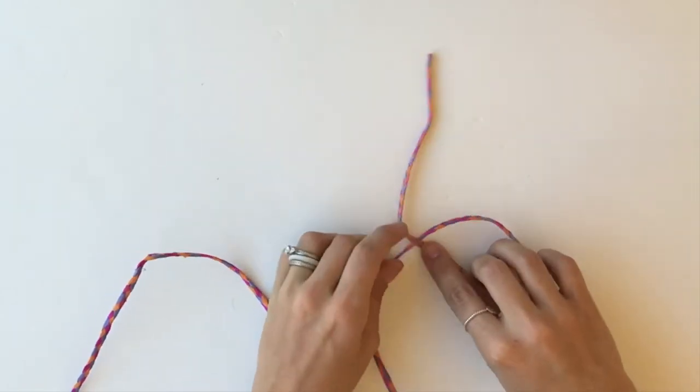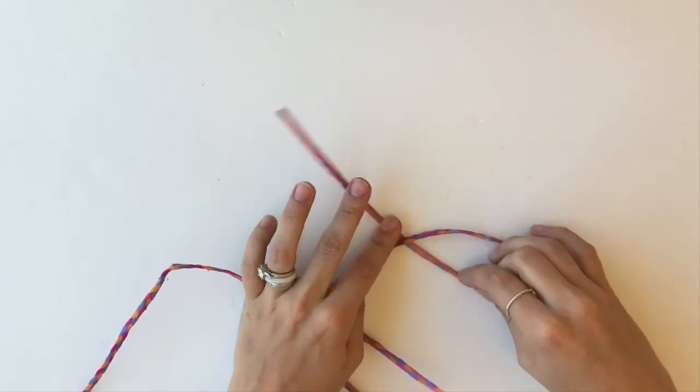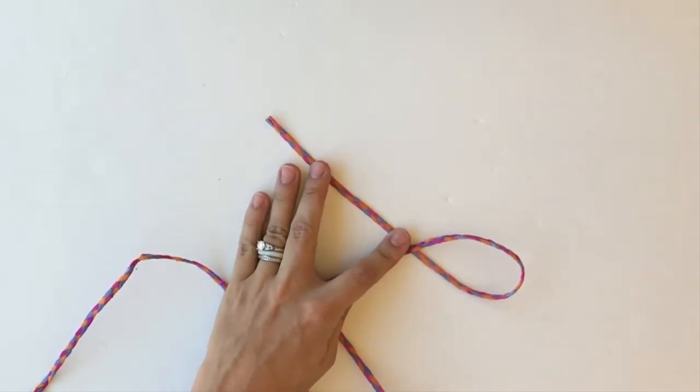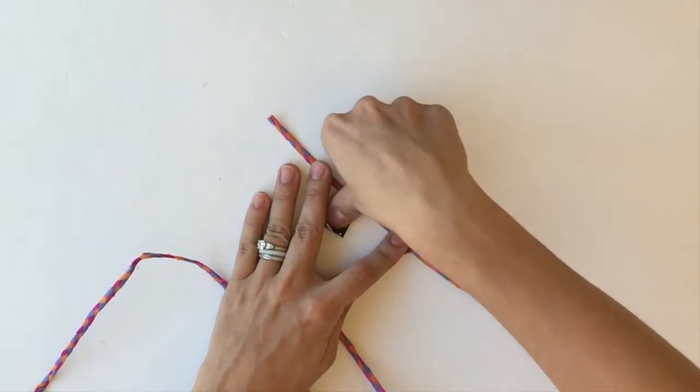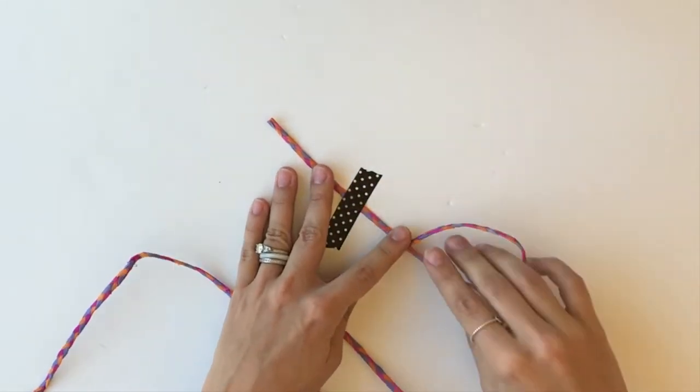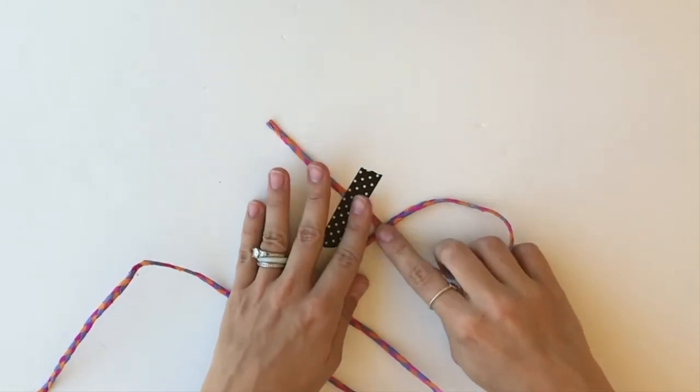So the first thing I'm doing is crossing one side underneath the other side. To help me show you and to make it a little bit easier, I'm going to use a little piece of washi tape and just tape that end down.